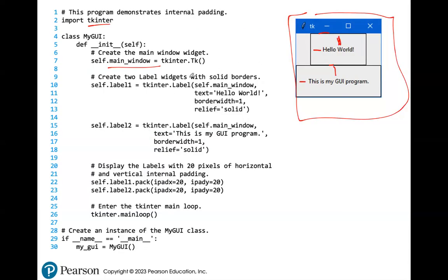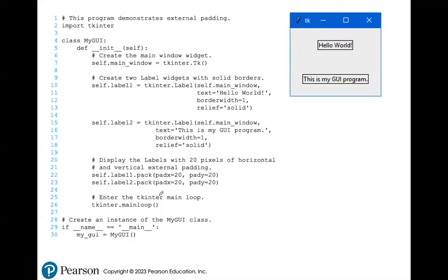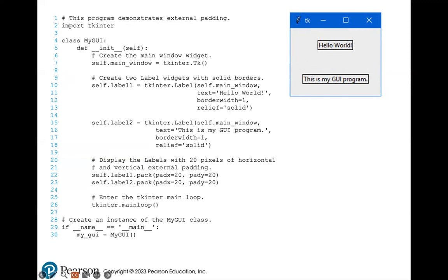For external padding, instead of using 'i' — where I stands for internal — so for internal padding X we use iPadX, for external we use padX without the 'i.' It works the same way: for horizontal we use X, for vertical we use Y, and you specify how many pixels. In this next example, instead of doing internal padding we are doing external padding. Our borders are very small, but they have a lot of space around them — that is the example of internal padding versus external padding. You can also combine both external and internal padding.